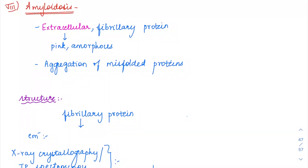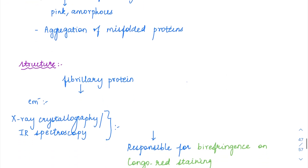We will move on to amyloidosis. Amyloidosis involves deposition of a material called amyloid, which causes tissue damage and organ dysfunction. Amyloid is a fibrillary protein with an amorphous morphology and is characteristically extracellular — never intracellular. It is an extracellular amorphous pinkish material which results from the aggregation of misfolded proteins. Amyloid can be of various types, and these misfolded proteins tend to accumulate and cause organ dysfunction.